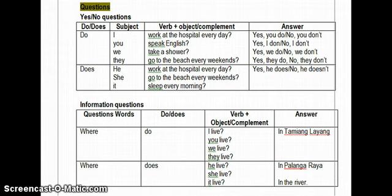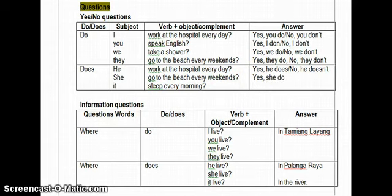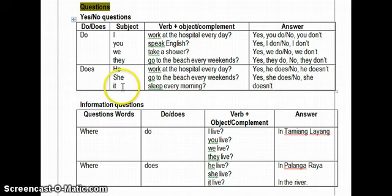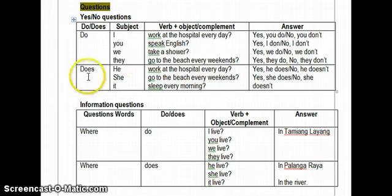'Does she go to the beach every weekend?' — 'Yes, she does' or 'No, she doesn't.' Also, 'Does it sleep every day?' — 'it' is used to replace objects, animals, or plants, basically non-human beings where gender is not important. The answer would be 'Yes, it does' or 'No, it doesn't.'